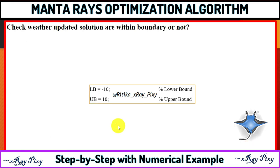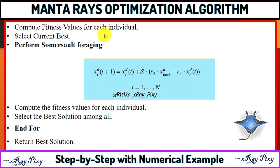After getting the updated values for each search agent, we check whether all updated solutions are within the boundary — that is, all values must be within the lower bound and upper bound. Check all solutions whether they are within the bound or not, then calculate the fitness value for each individual and select the best among all.